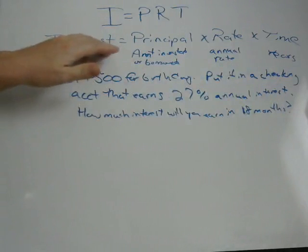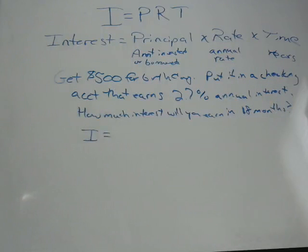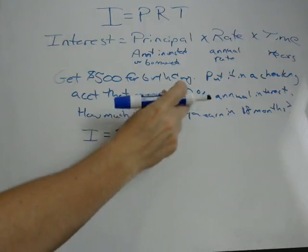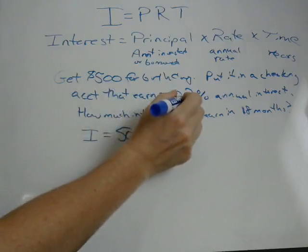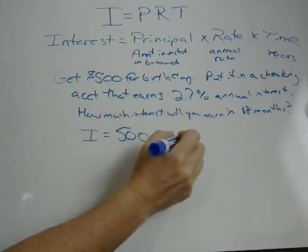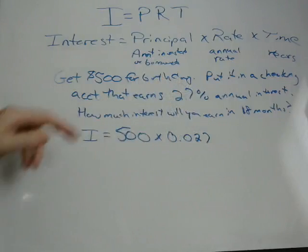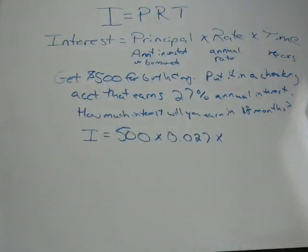We have all the elements of the formula. Interest is what we're trying to figure out. Principal — how much we invested — is $500. Our rate is 2.7%. Remember, you can't multiply percentages, only decimals, so you have to change 2.7% into a decimal by moving the decimal point two places to the left, giving you 0.027. Then we multiply by time, and remember, time has to be in years.